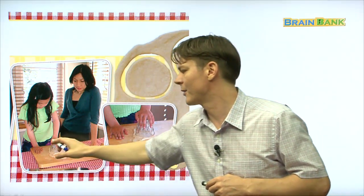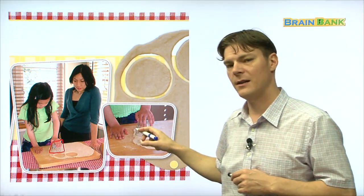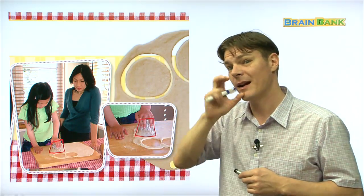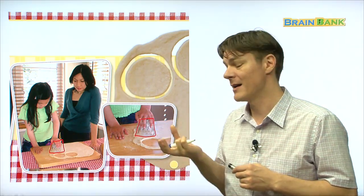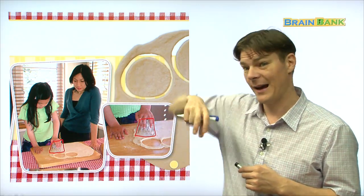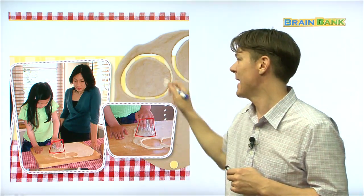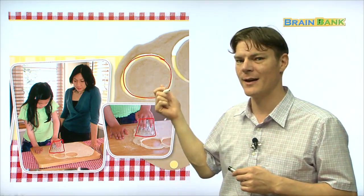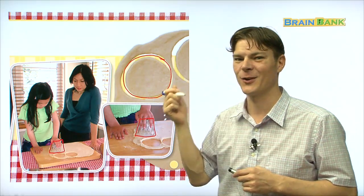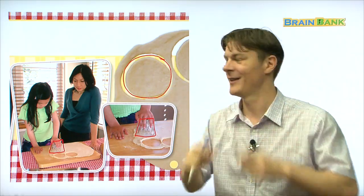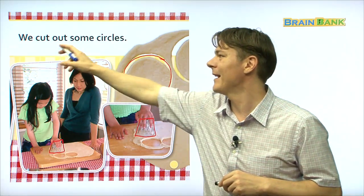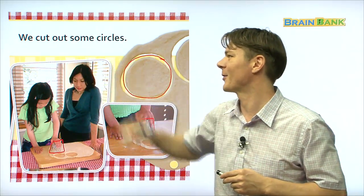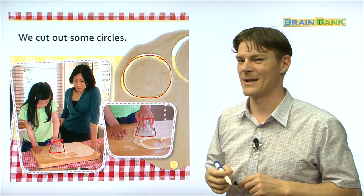So, here's the little girl. And she is using, can you see what that is? That is a cup. The same kind of cup we use for drinking. But she's turned it upside down, and she's twisting it like this, making this shape. Does anybody know what shape that is? This is a circle. Circle. We cut out some circles. Everyone repeat with me. We cut out some circles. Alright. Great. Now what's next?